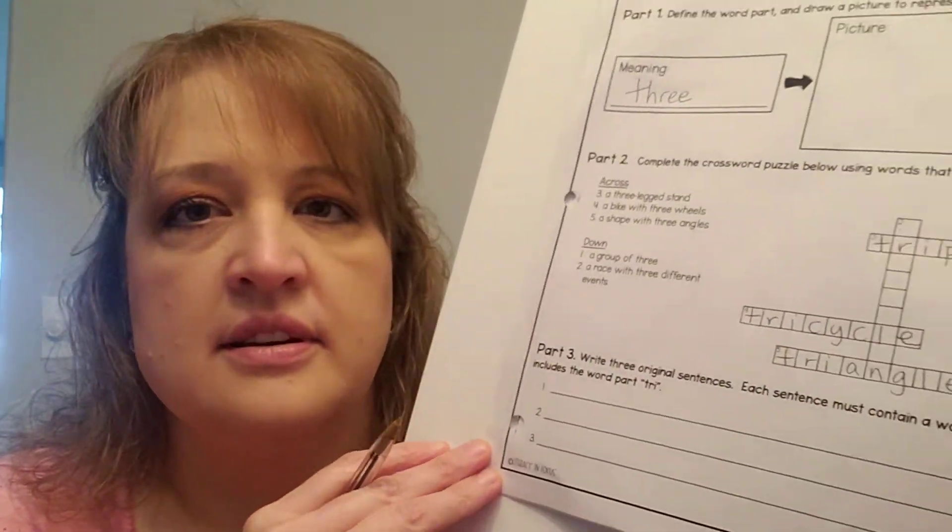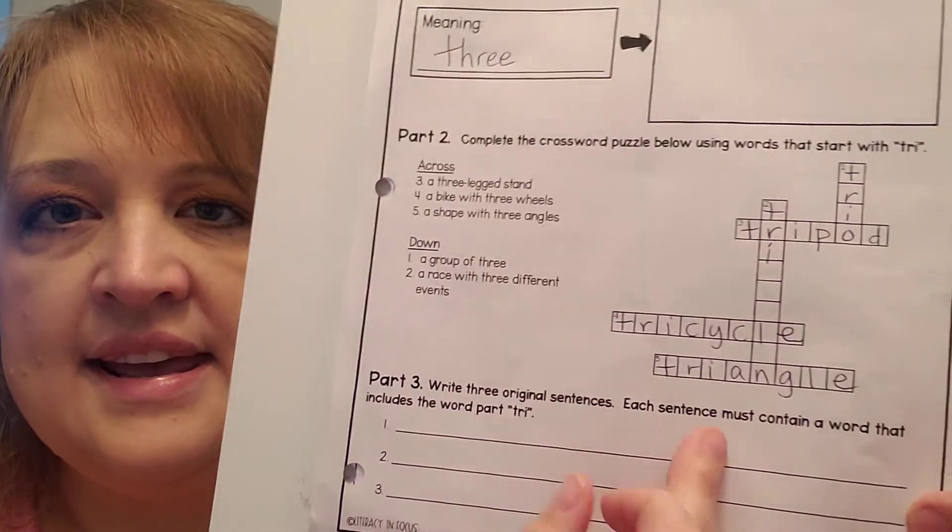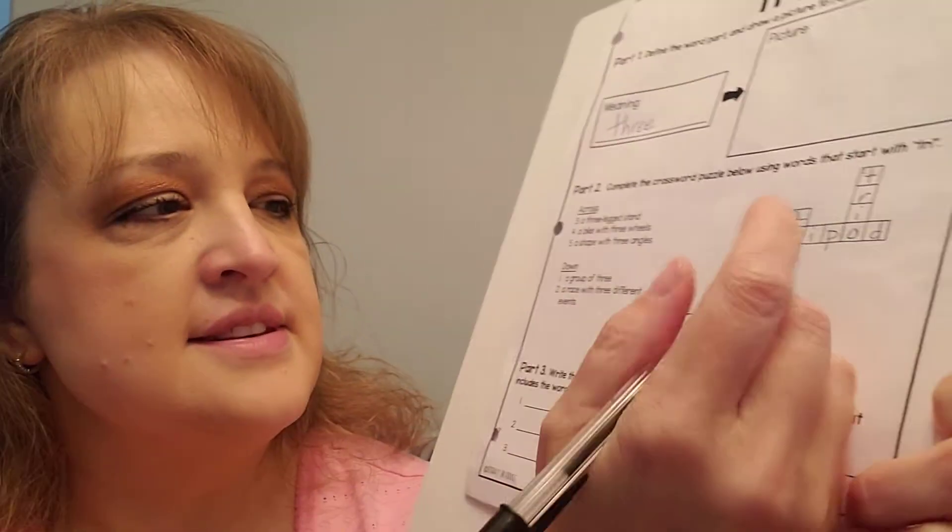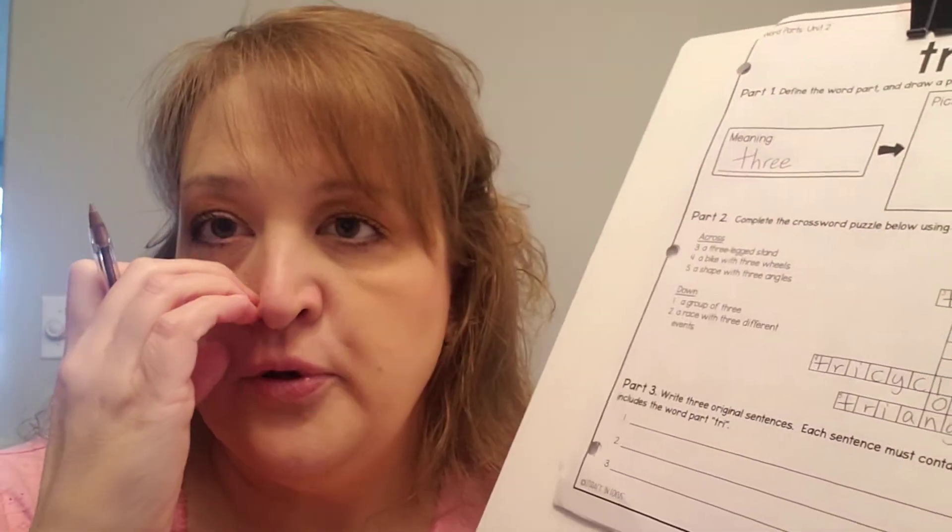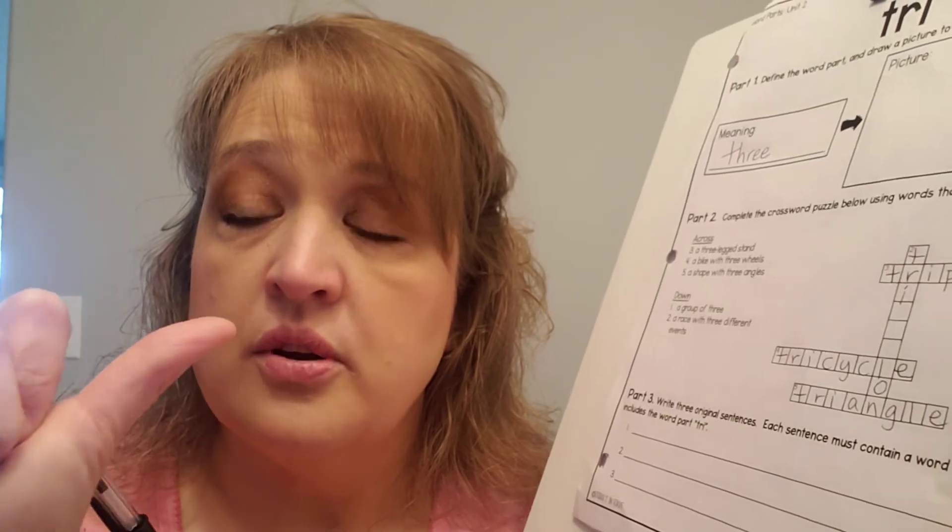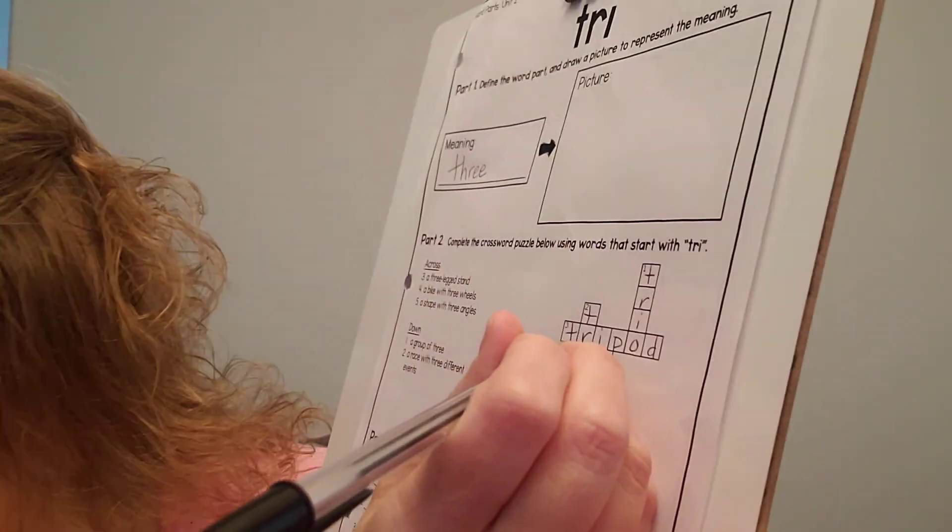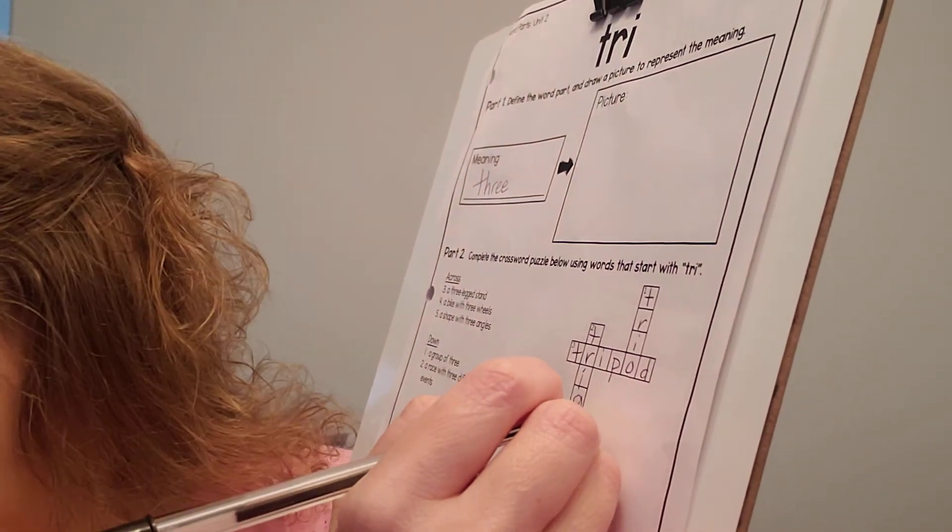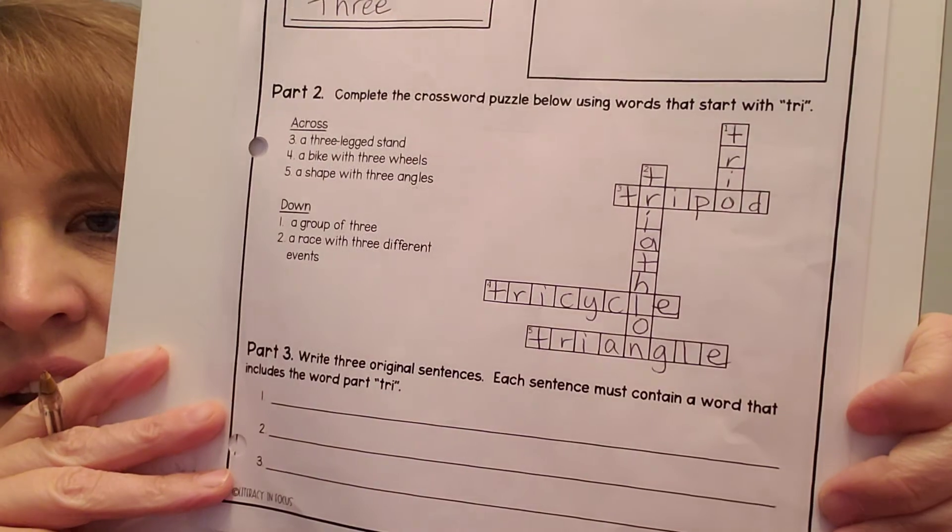All right, the last one is a race with three different events. Okay, well, we know that it has to have tri in it. So, tri, and then it ends with L and then an N. Can you think of what it is? Triathlon. Okay, so a lot of people who run in or do a triathlon, they do running, they do swimming, and they do biking. And there's different parts of it, and you have to do all three in order to finish the race. So that's a triathlon. So it's T-R-I-A-T-H-L-O-N. Triathlon.